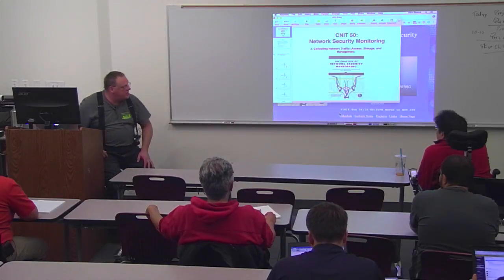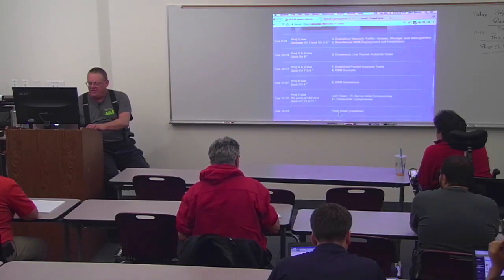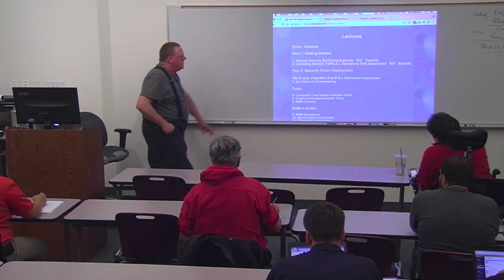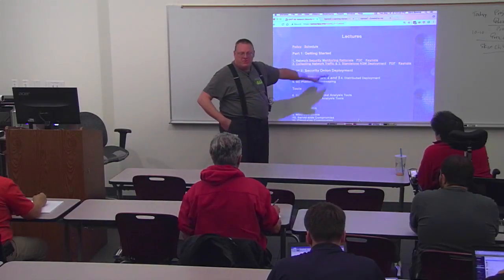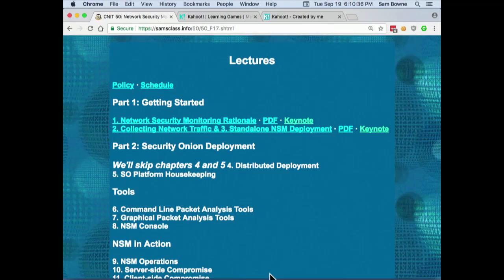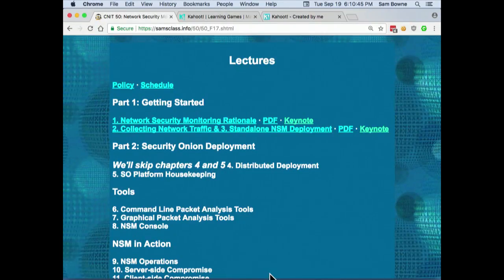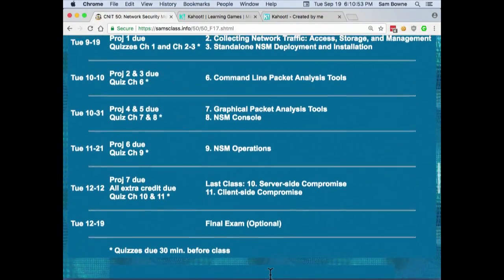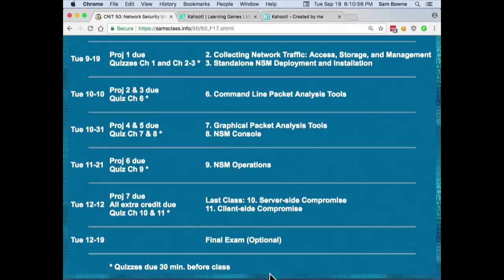An important scheduling note: I decided to skip chapters four and five. We've already done a standalone deployment — a single machine monitoring itself — so you can practice with the tools. Chapters four and five are just about distributed deployment, how to deploy it across the network, and I'm not planning to cover that right away. I want to move on to the command line, graphical, and console tools to analyze data. Next week your quiz is on chapter six, so don't bother with four and five for now.